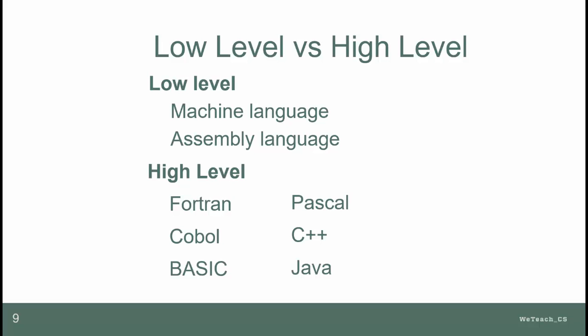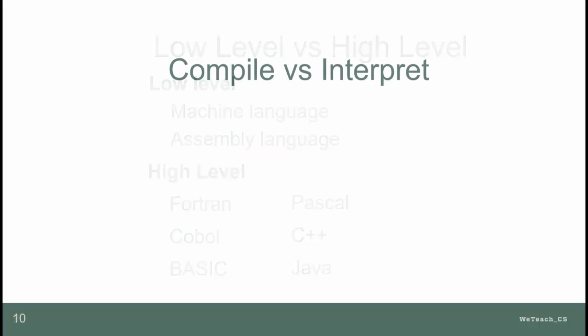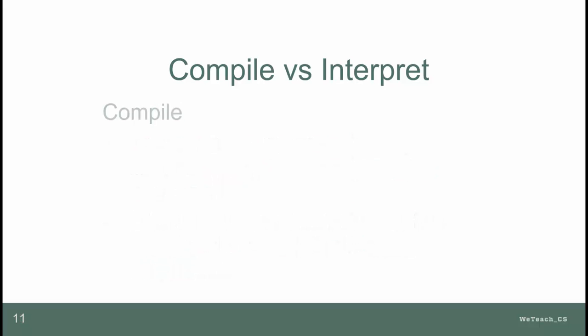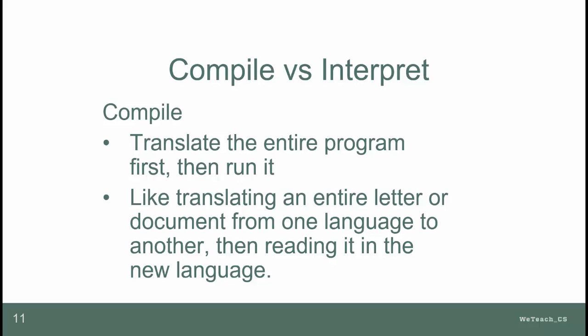These high-level languages all need to be translated into machine code, and there are two general ways to do this: interpret or compile. An interpreted language program is translated and executed line by line — for example, you could think of translating a conversation from Spanish to English by interpreting each spoken sentence one at a time. A compiled language program is translated all at once and then executed, like taking a complete document written in one language, translating the entire paper into another language, and then reading it in the new language.